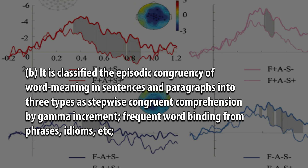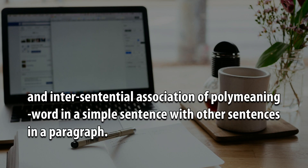b. It has classified the episodic congruency of word meaning in sentences and paragraphs into three types: stepwise congruent comprehension by gamma increment, frequent word binding from phrases, idioms, etc., and inter-sentential association of polymeaning words in a simple sentence with other sentences in a paragraph.